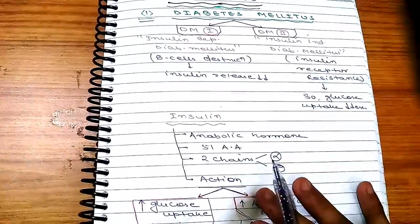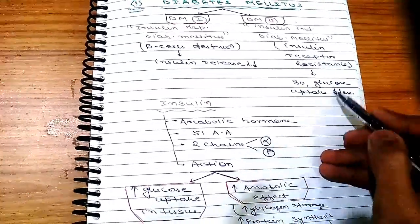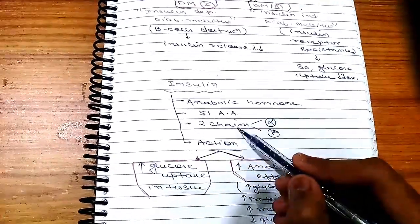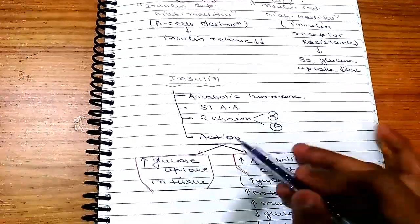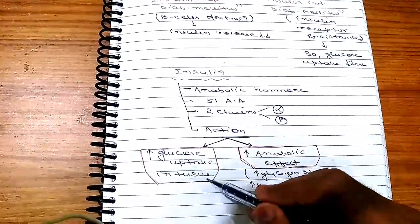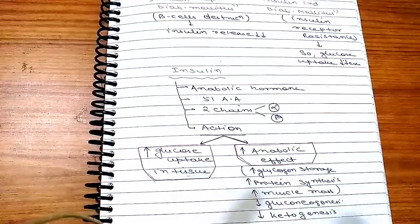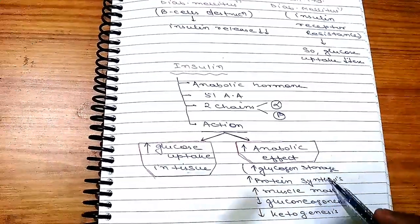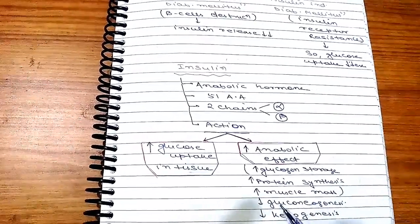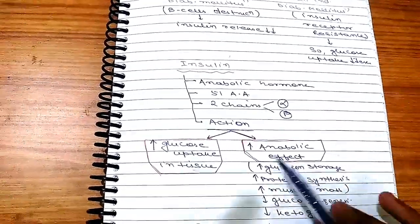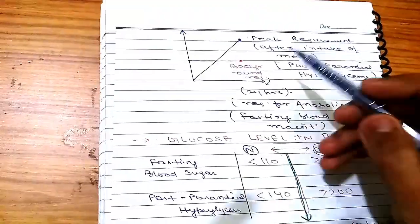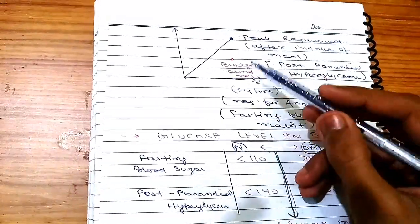In DM2 there is insulin receptor resistance, so glucose uptake decreases. Insulin is an anabolic hormone with 51 amino acids arranged in two chains, alpha and beta. Its main actions are: increasing glucose uptake in tissues, increasing anabolic effects such as glycogen storage, protein synthesis, and increasing muscle mass, while decreasing gluconeogenesis and ketogenesis.